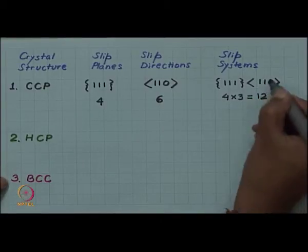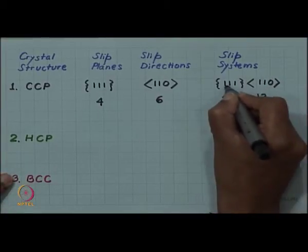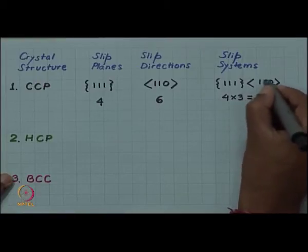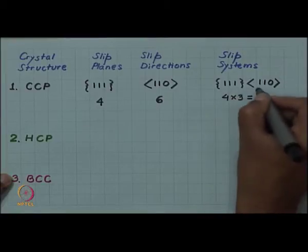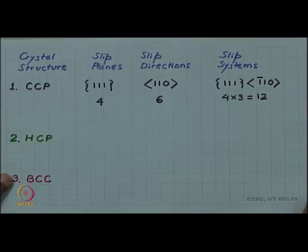Sometimes if you really want to be careful, you can insist that the direction lies on the plane. So you can satisfy the particular choice which you have made using Weiss zone law. So I can write [1̄10] instead of 111.